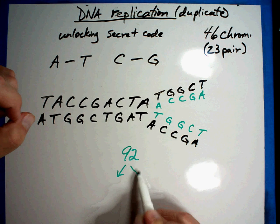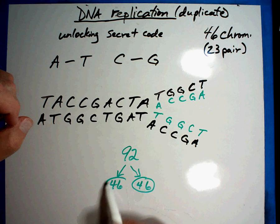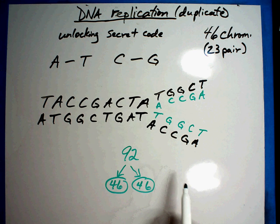So it's going to have to split into two. And what's going to happen is that you're going to get two cells that each have 46 chromosomes, and they look just like the original.